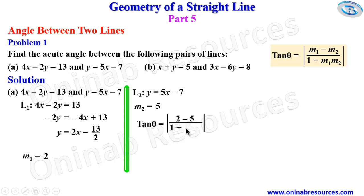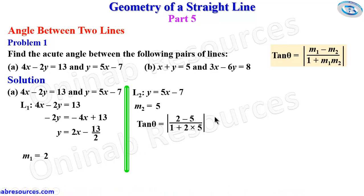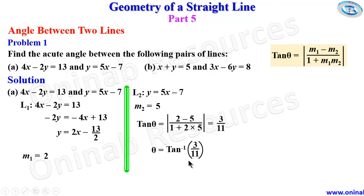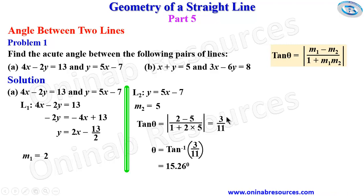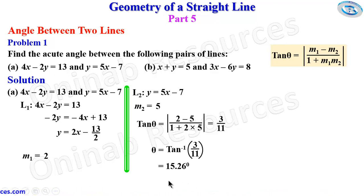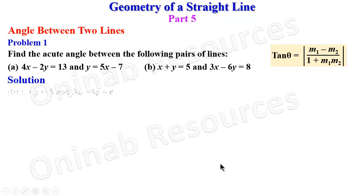Simplifying, we get 3 over 11. So tan theta equals 3 over 11, meaning theta equals tan inverse of 3 over 11, which gives 15.26 degrees. The absolute value returns the positive value — it would have been negative 3 over 11, but since we want the positive value, the negative is dropped. So the acute angle between the two lines in 1a is 15.26 degrees.